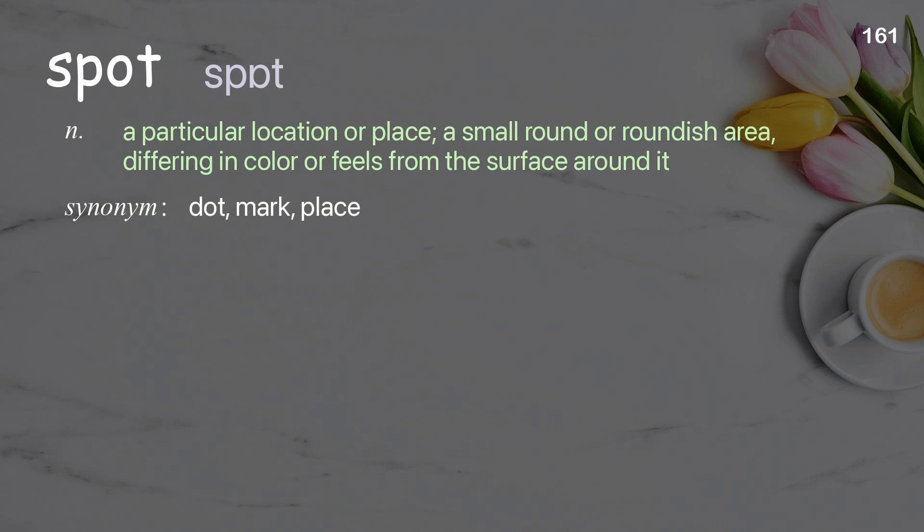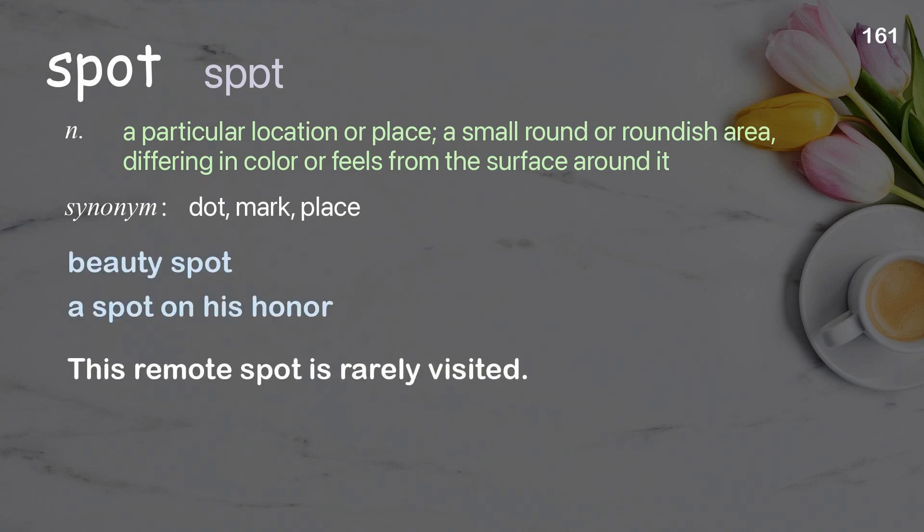Spot: a particular location or place; a small round or roundish area differing in color or feel from the surface around it. Examples: beauty spot, a spot on his honor. This remote spot is rarely visited.